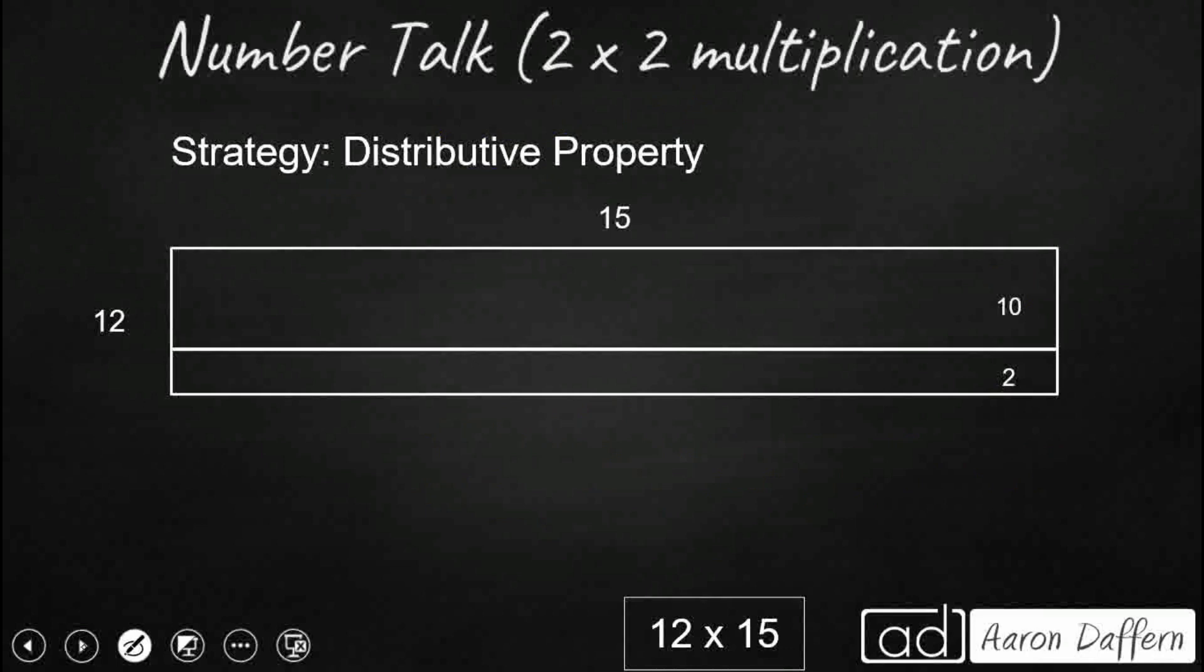We can take the distributive property. We can still look at breaking up our 12, but instead of breaking it in half, we are going to take our 12 and we are going to break it up into place value. Think of expanded form. So this 12 is really 10 plus 2 times 15. We're still going to distribute this 15 out to both the 10 and the 2 to make some partial products.